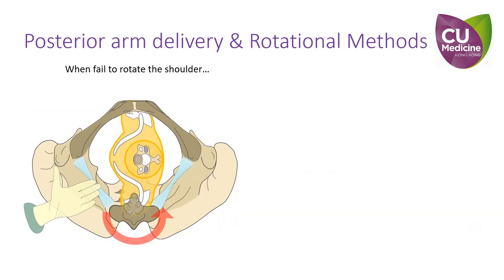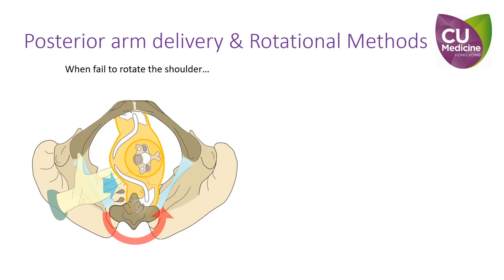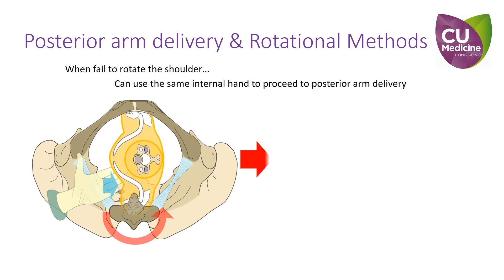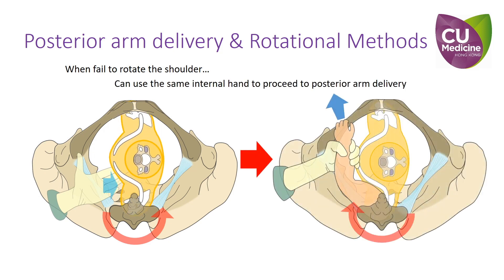Finally, posterior arm delivery can be integrated with the Wood Screw maneuver. If you insert the correct hand anterior to the fetal body, you may consider attempting the Wood Screw maneuver first. However, should this fail, there is no need to remove your hand from the pelvis — use the same internal hand and attempt posterior arm delivery. On the other hand, if you have inserted the correct hand to attempt a posterior arm delivery first but failed to grasp the forearm or complete delivery, you may use the same internal hand and try the Wood Screw maneuver.